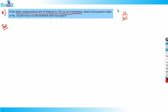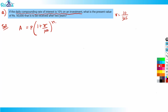Now, for how many days will it be compounded — that's the more important part. The compound interest formula is: Amount = P × (1 + r/100)^n, where r is the rate and n is the tenure — it could be years or any period.